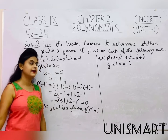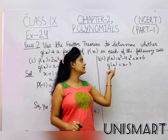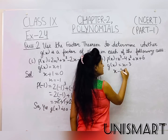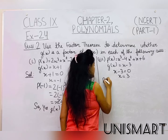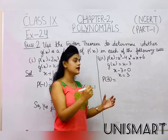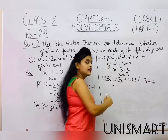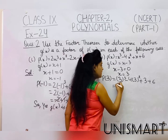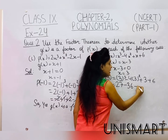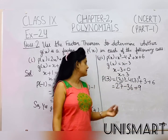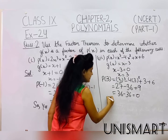Moving to the third part: p(x) = x³-4x²+x+6, and g(x) = x-3. Setting x-3 = 0 gives x = 3. We substitute into p(x): (3)³ - 4(3)² + 3 + 6. That is 27 - 4×9 + 3 + 6 = 27 - 36 + 9. Adding the positives: 27+9 = 36, and 36 - 36 = 0. So yes, g(x) is a factor of p(x).